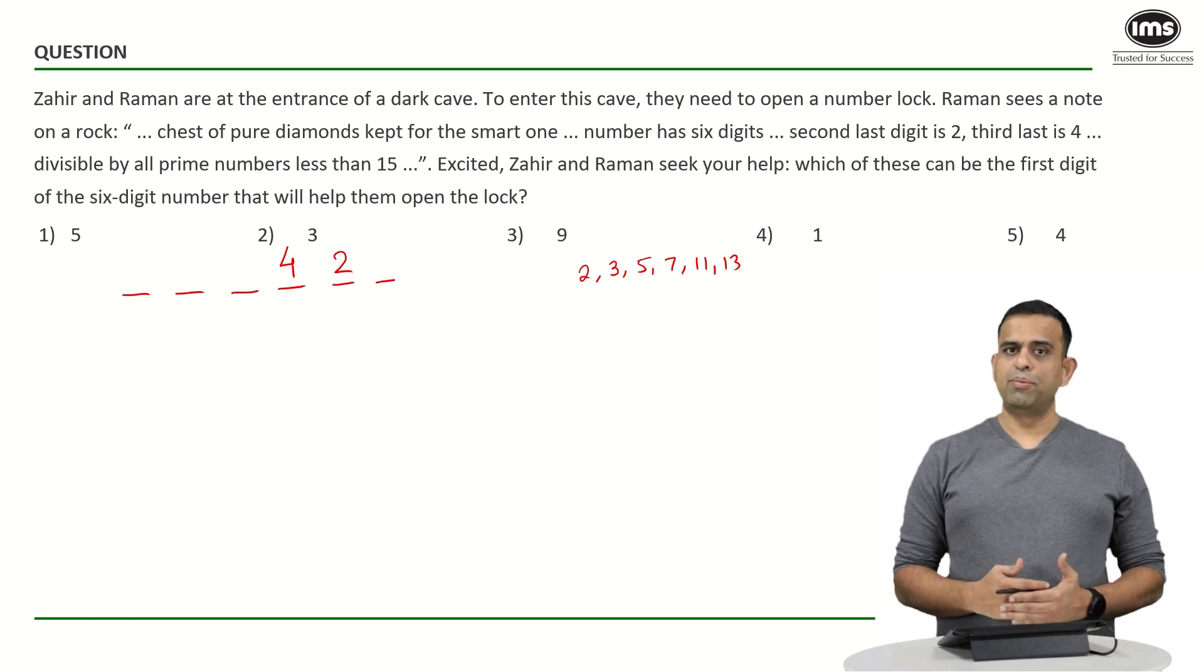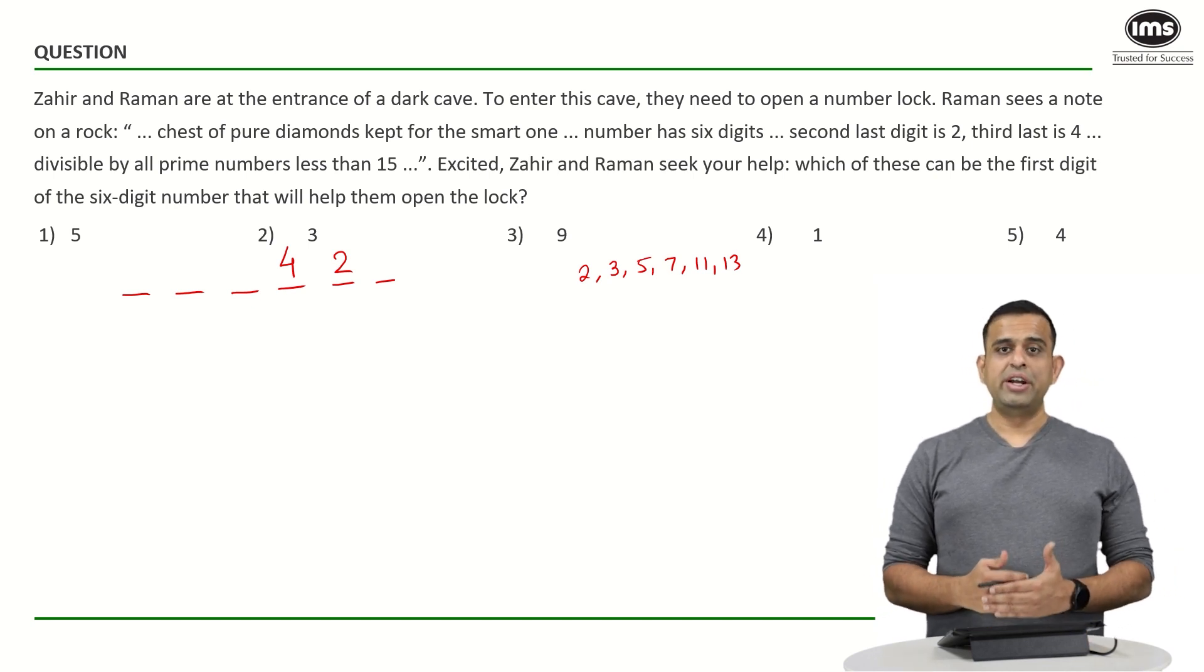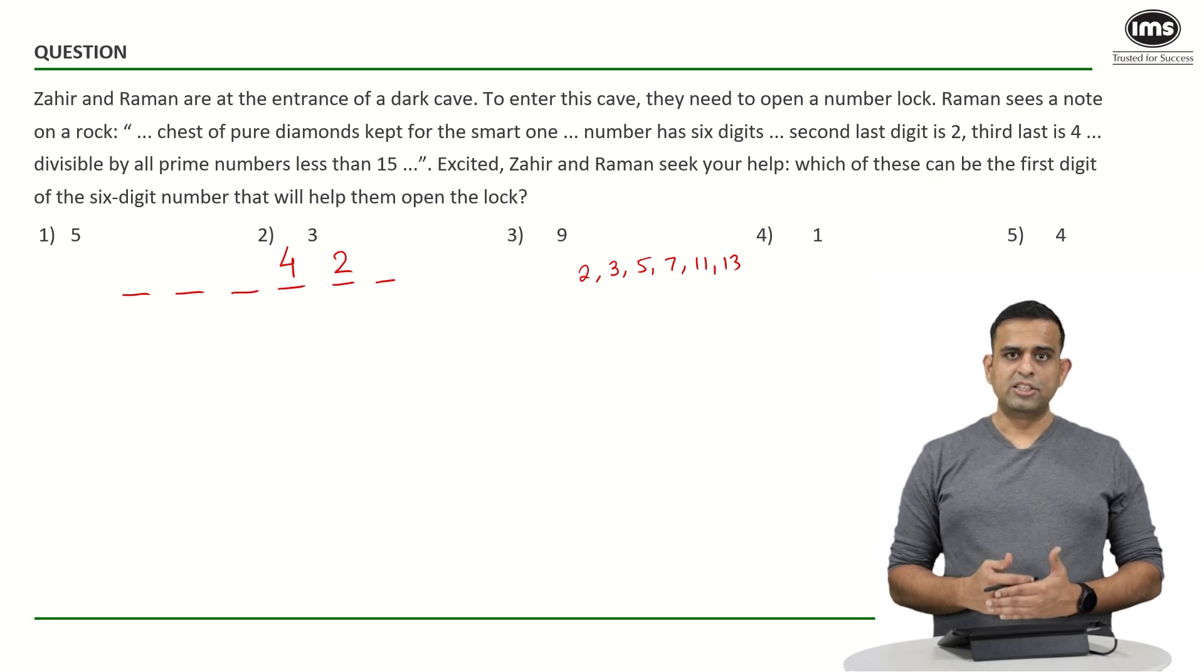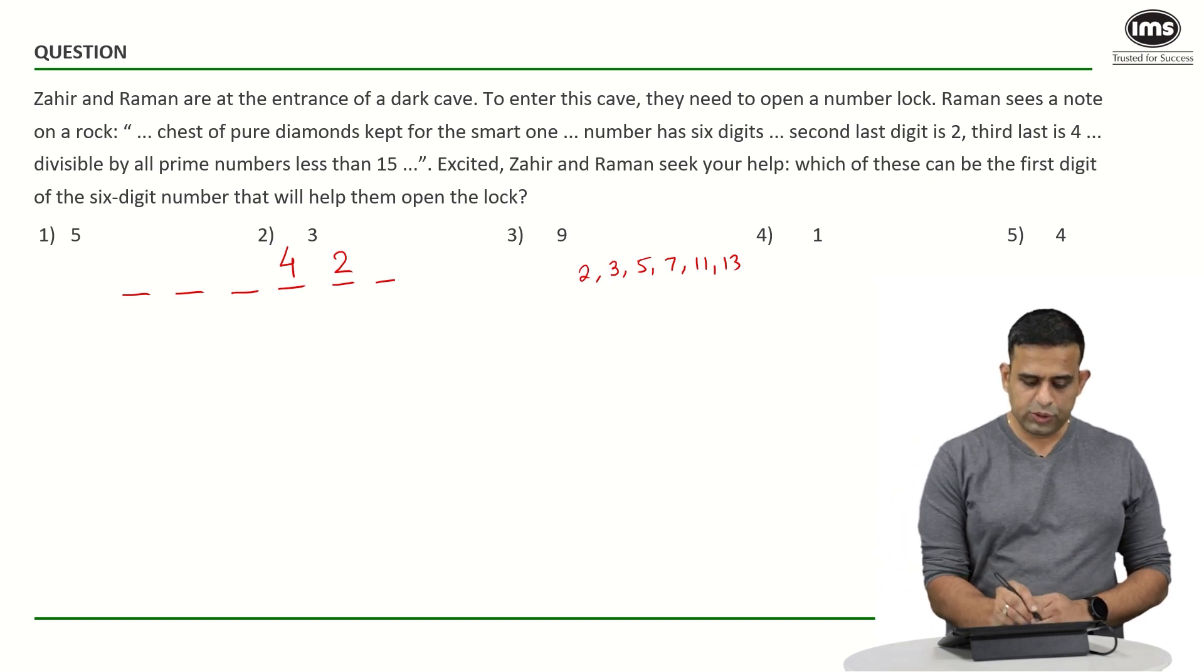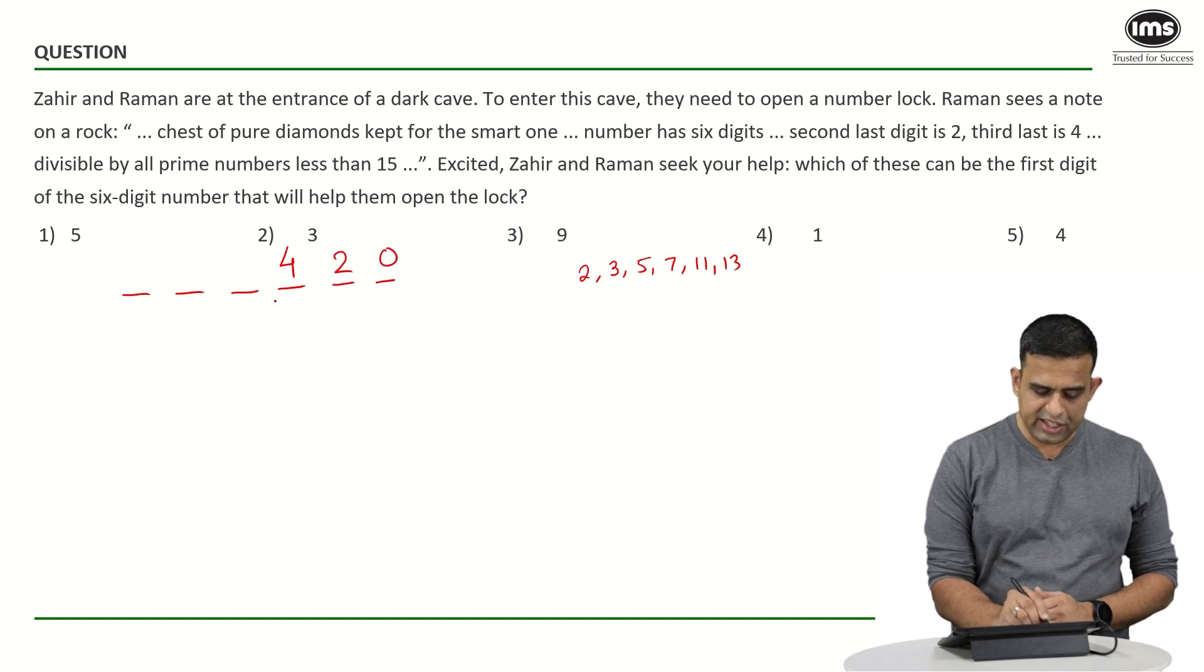Now if I say a number is a multiple of 2 and 5, it has to end in a 0. So can I say properly that my last place of this code has to be a 0. So my last three are easily known to us.